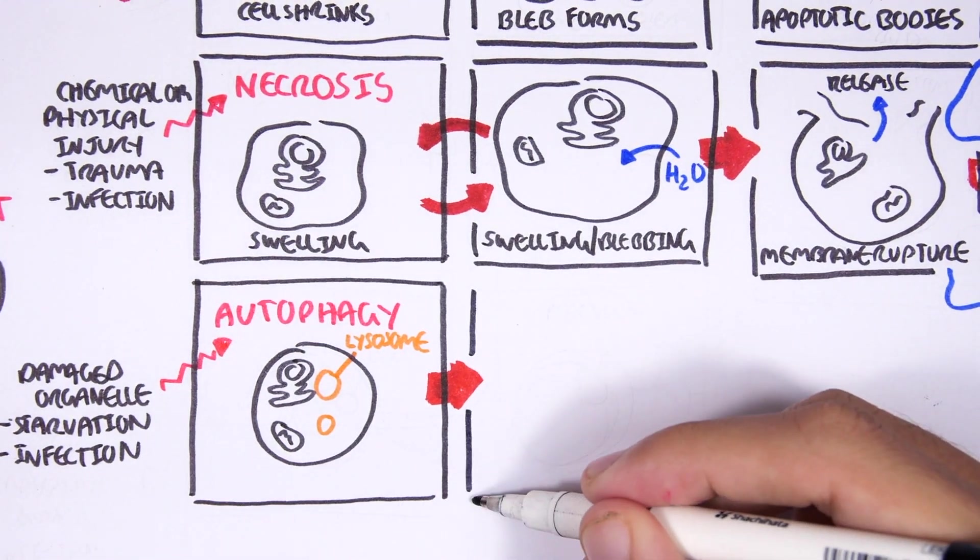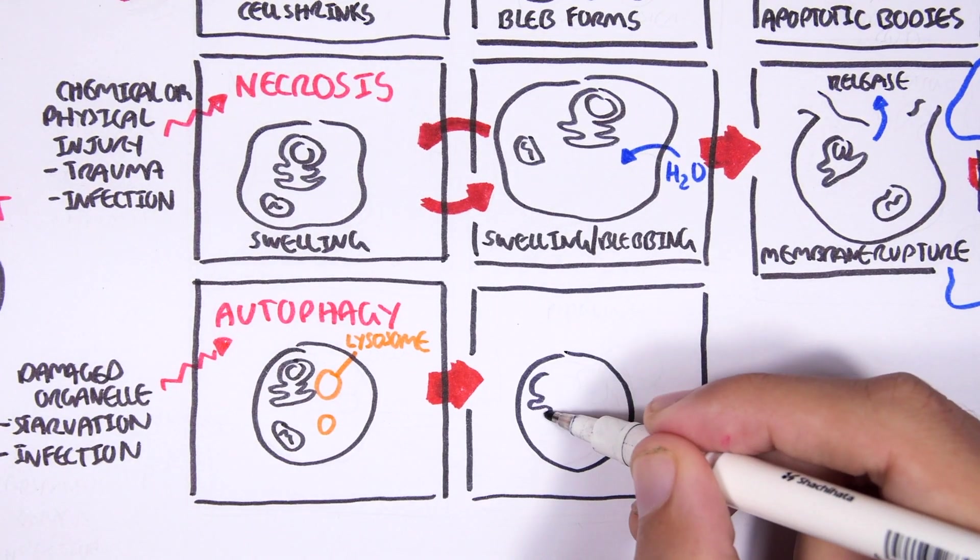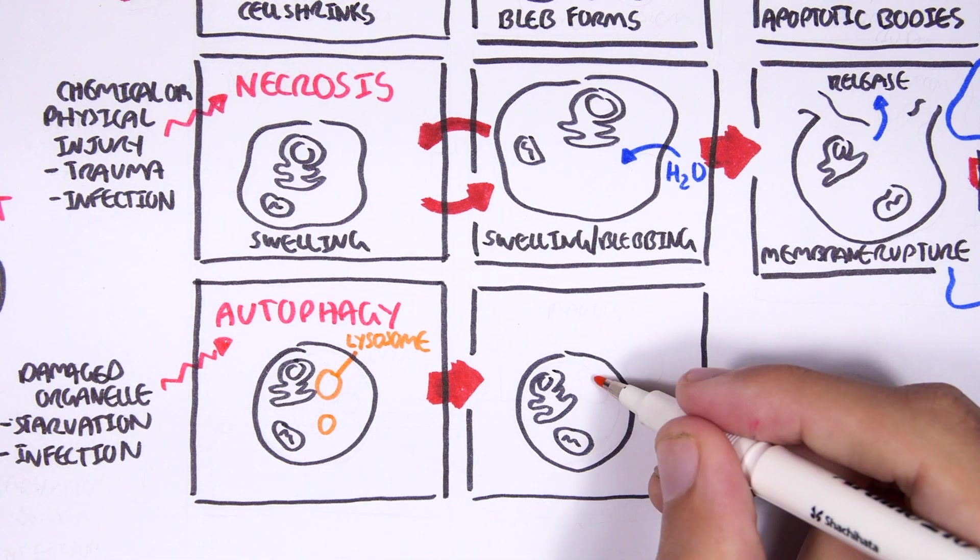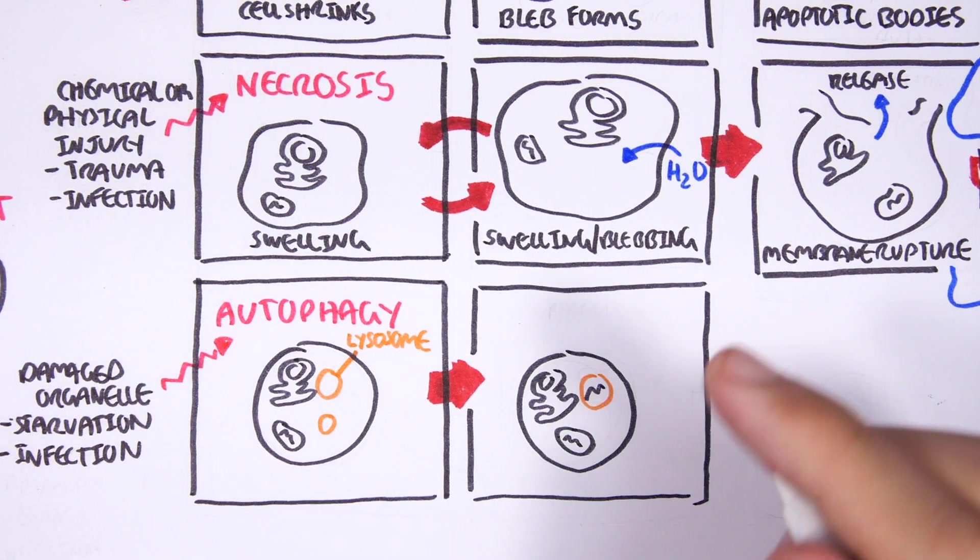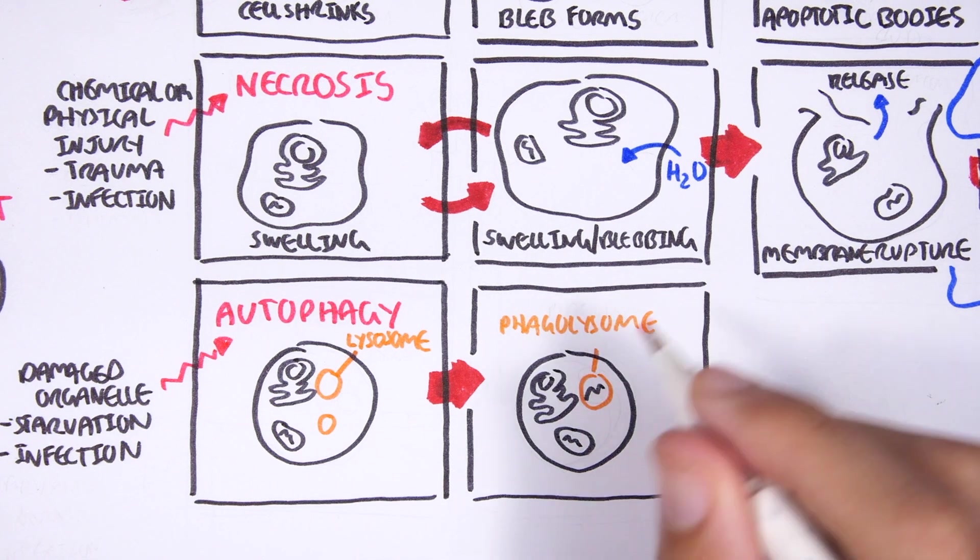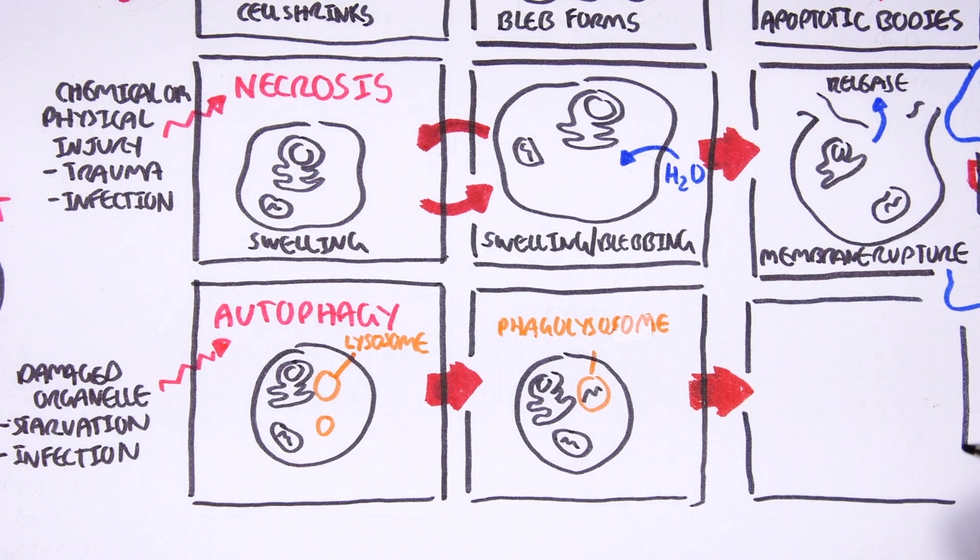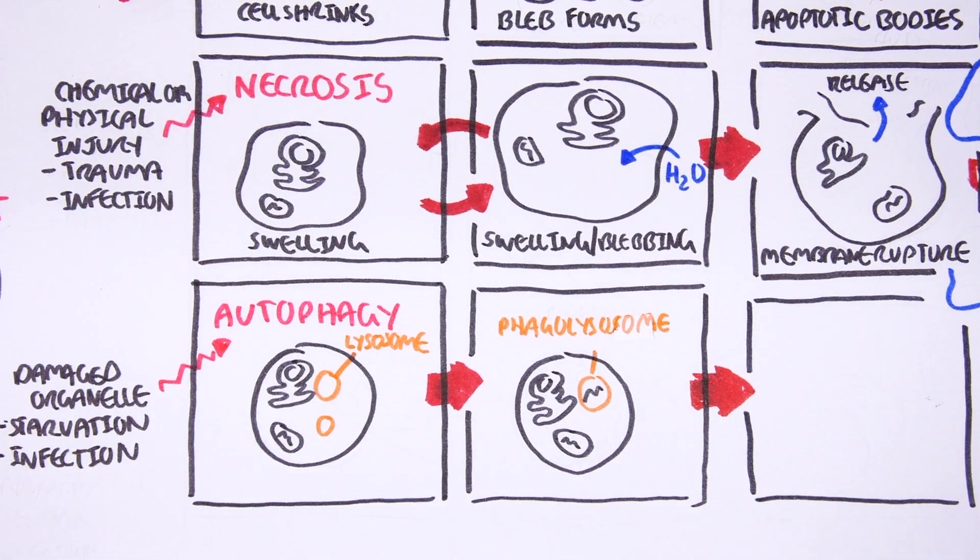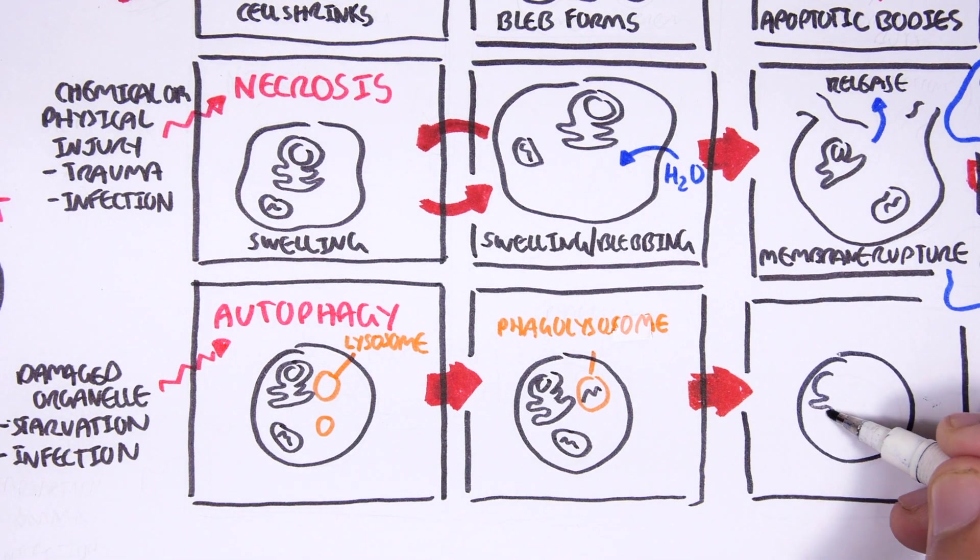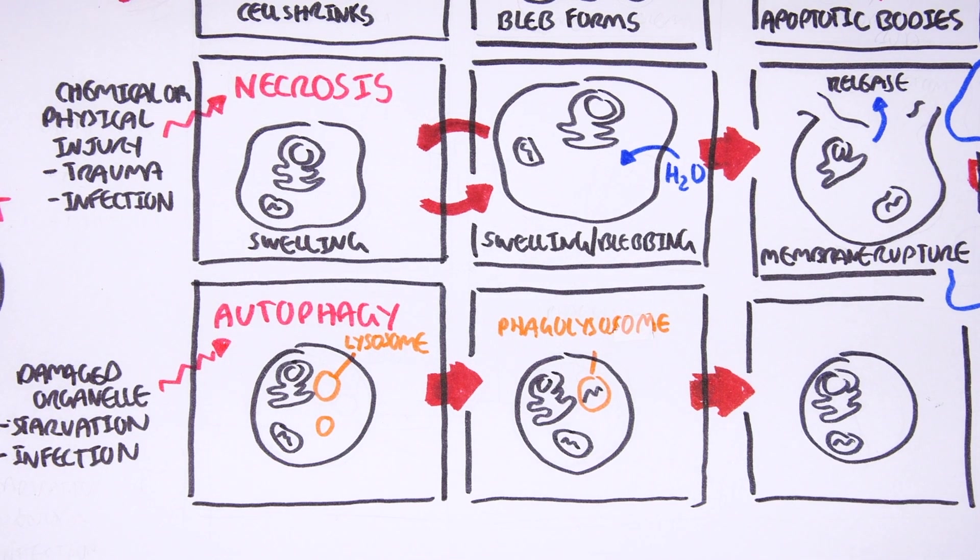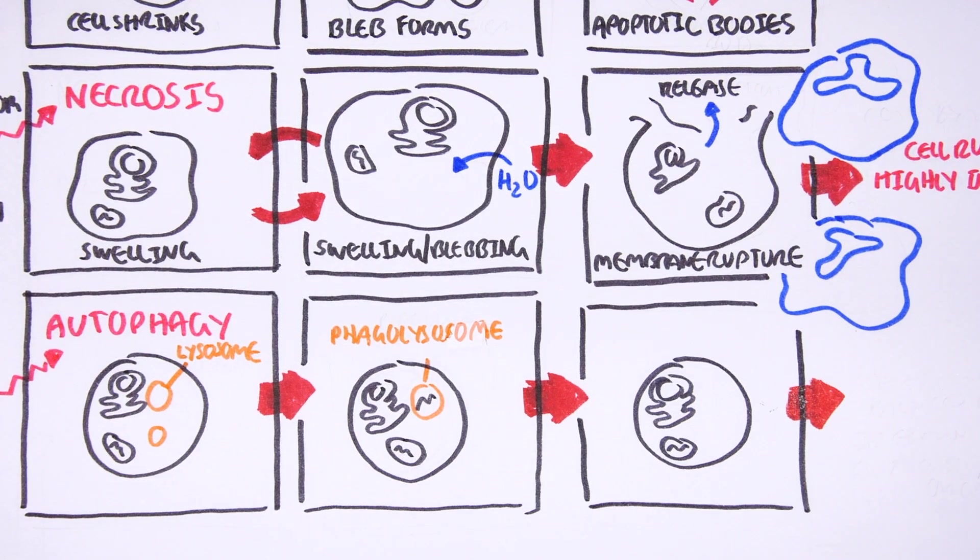What happens here is that the cell normally has lysosomes, which are vesicles containing an acidic environment. The cell will program the lysosomes to engulf the damaged organelles, or if it was an infectious agent, to engulf the infectious agent. And whatever it is, the lysosome will essentially digest it.